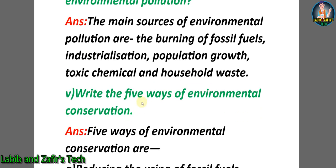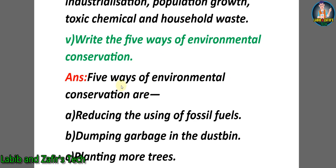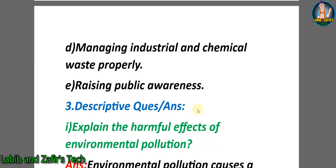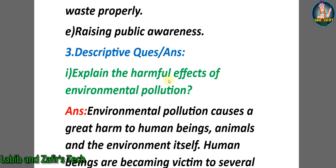Fifth question: write five ways of environmental conservation. Answer: five ways of environmental conservation are — A) reducing the use of fossil fuels, B) dumping garbage in the dustbin, C) planting more trees, D) managing industrial and chemical waste properly, E) raising public awareness. Now our third topic: descriptive question answers.